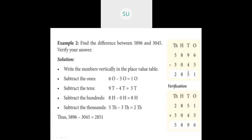To verify the answer, add your difference 2,851 with the subtrahend 3045. Ones: 1 plus 5 is 6. Tens: 5 plus 4 is 9. Hundreds: 8 plus 0 is 8. Thousands: 2 plus 3 is 5. The result is 5,896, which equals our minuend. So the difference between 5,896 and 3,045 is confirmed as 2,851.